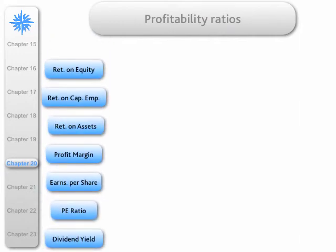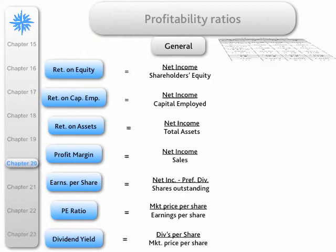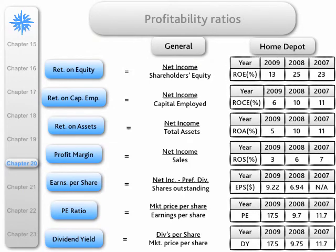Here are the profitability ratios, which you saw on the other sheet. I've laid them out here and given the general formula for them. Taking return on equity: it's net income over shareholders' equity. And then I have done it for Home Depot, where we see each of those ratios and how they have changed over that period of time. I won't make any specific comment on these ratios — you can make your own inferences on how Home Depot is performing. How profitable has Home Depot been?